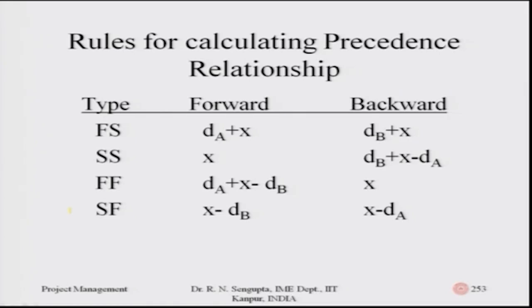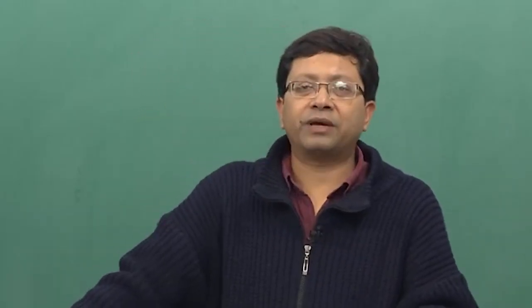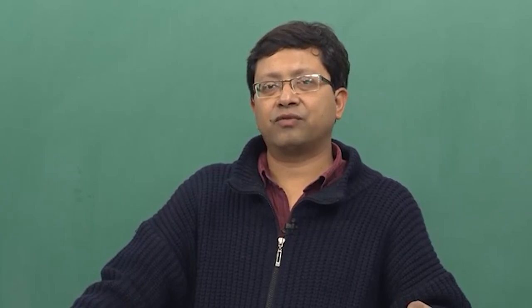It may not make immediate sense, but once the problem is solved it will become clear. For finish-to-finish, the forward method gives D_A plus X minus D_B to find the starting and finishing of jobs. The backward method uses X, the number of days gap between A and B, proceeding right to left. For start-to-finish, the forward method uses X minus D_B; the backward method uses X minus D_A.